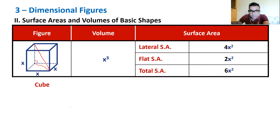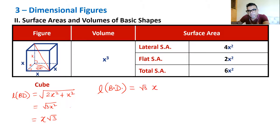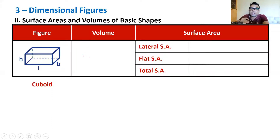The longest rod placeable inside a cube is the body diagonal. To find its length: the base diagonal (hypotenuse of the base square) = √(x² + x²) = x√2. Then the body diagonal = √(x√2)² + x²) = √(2x² + x²) = √(3x²) = x√3. So the body diagonal of a cube with side x is x√3.